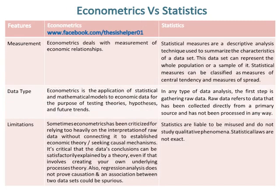Econometrics deals with measurement of economic relationships, while statistical measures are a descriptive analysis technique used to summarize the characteristics of a data set. This data set can represent the whole population or a sample of it. Statistical measures can be classified as measures of central tendency and measures of spread.